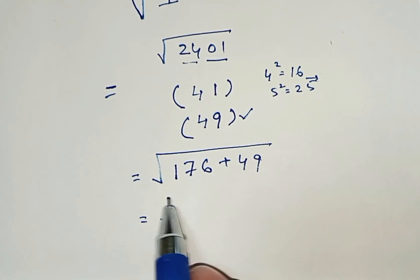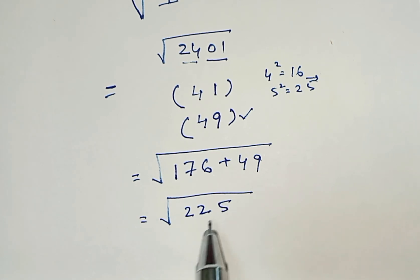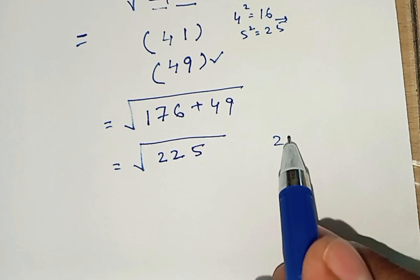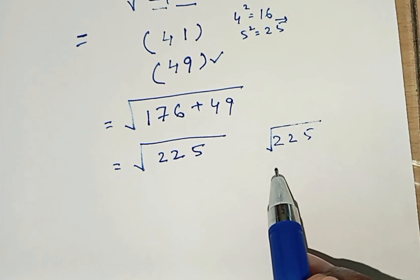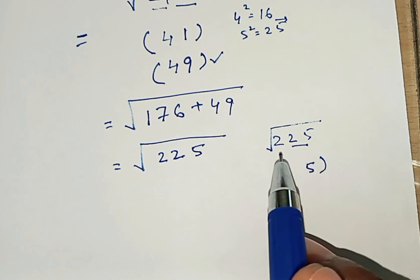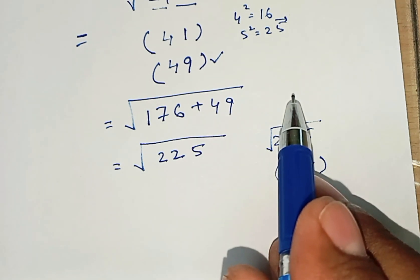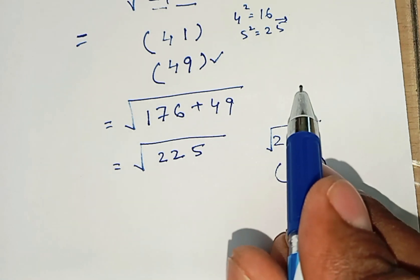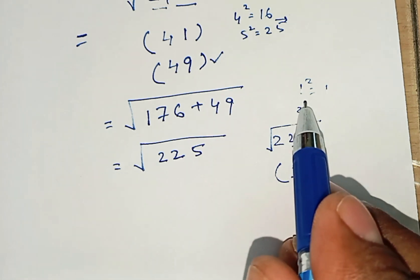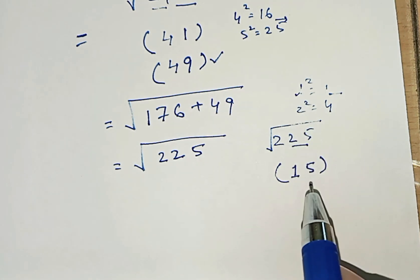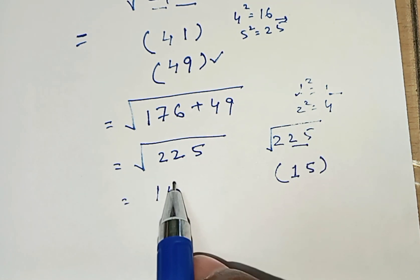176 + 49 = 225, so we need √225. The last digit of 225 is 5, and 5² ends in 25, so the last digit of the answer is 5. Now the first group is 2: since 1² = 1 and 2² = 4, and 2 is in between, the lowest number is 1. So the answer is 15. Thank you.